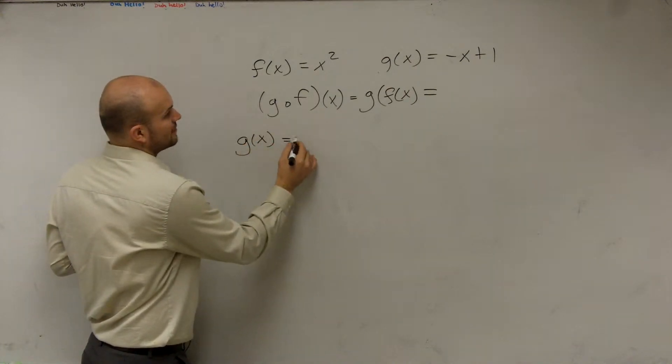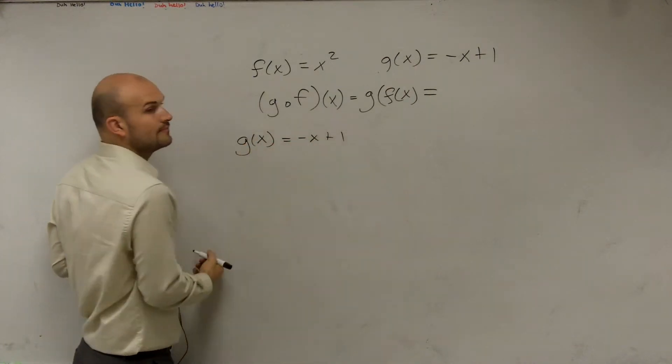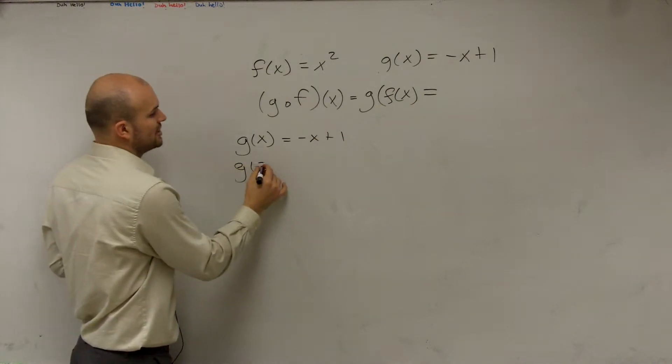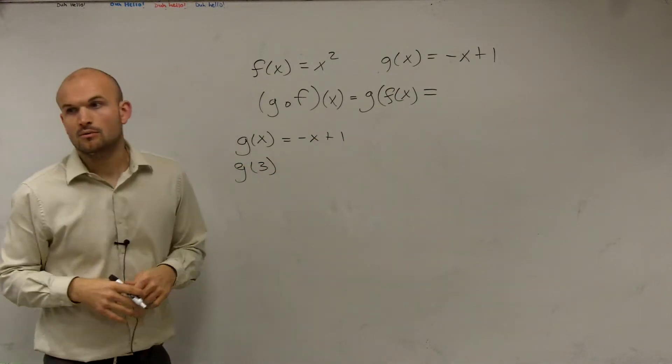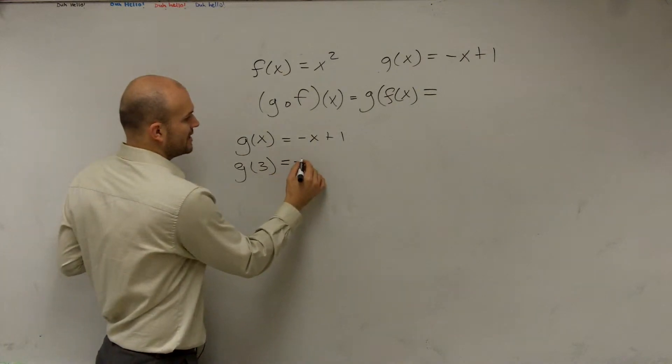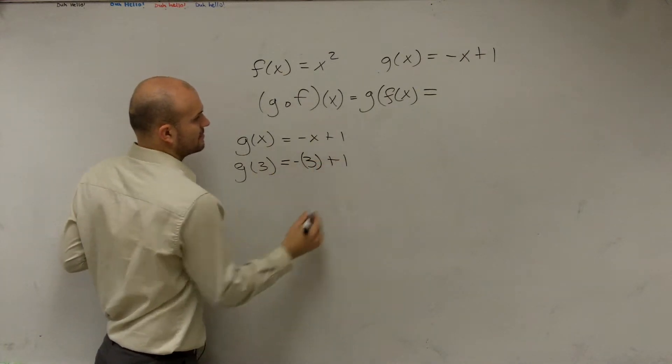If I said G of x equals negative x plus 1, okay, and I say, what is G of 3? Well, then, ladies and gentlemen, this is pretty basic. You just plug in the 3 in for the x, right?